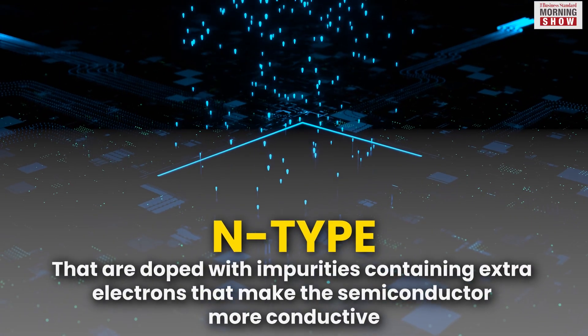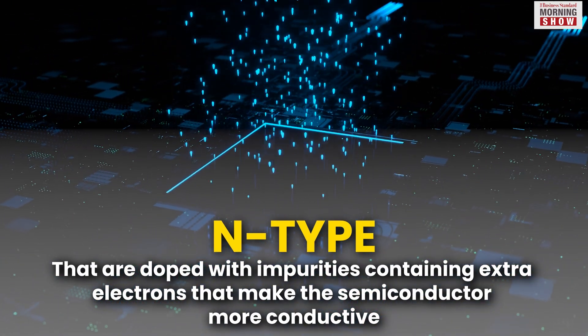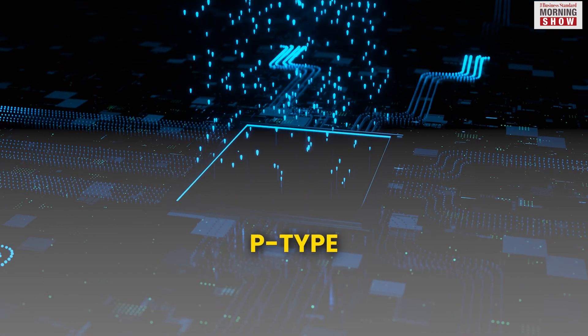This includes the N-type, that are doped with impurities containing extra electrons that make the semiconductor more conductive, and P-type,